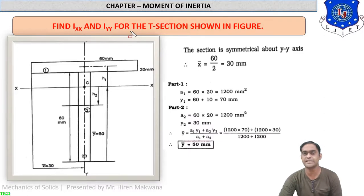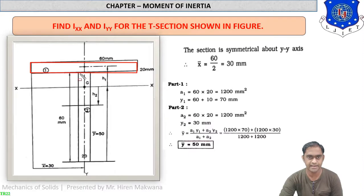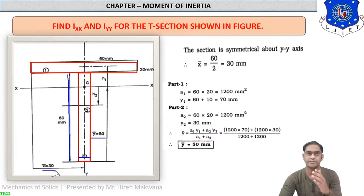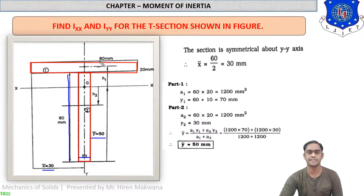In this numerical we have to find Ixx and Iyy for the T-section shown in the figure. In this T-section, part one is a horizontal rectangle and part two is a vertical rectangle. The width of the bottom rectangle is 20 mm and the vertical height is 60 mm. The horizontal length of the upper rectangle is 60 mm and the vertical height is 20 mm.